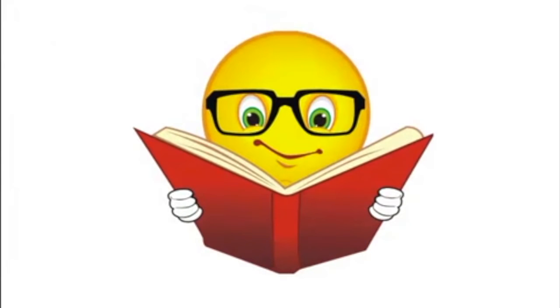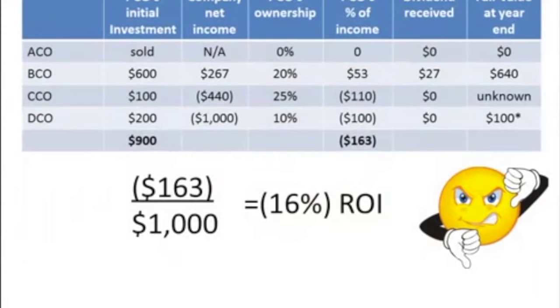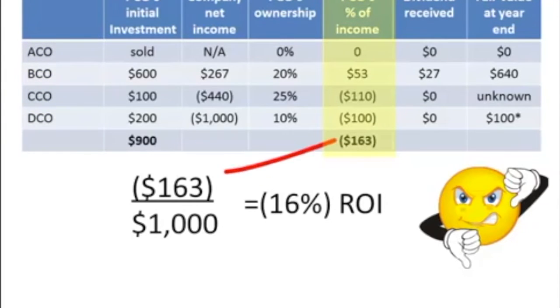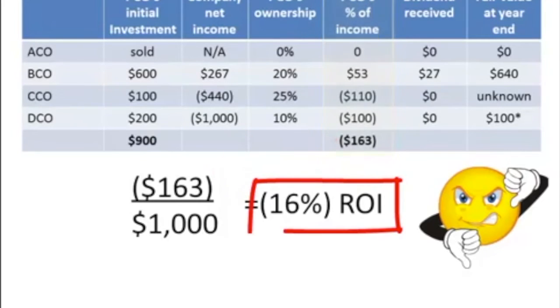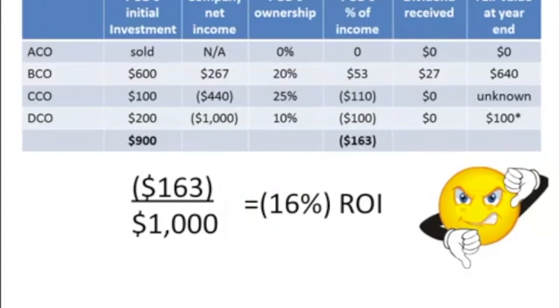The year-end results came in, which again Bob studied very carefully. Once again, Bob prepared a table summarizing as best he could the performance of each investment in the portfolio. Using P-Co's percentage of income reported for each investment, Bob estimated that the return on investment was a negative 16% for the second year. He wasn't very happy. With his ego bruised, he sent the investment results to the accountant for an official tabulation.